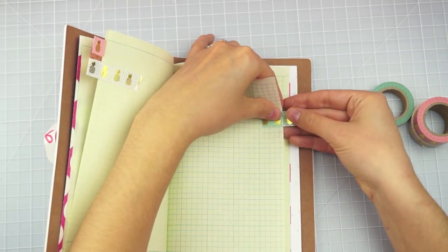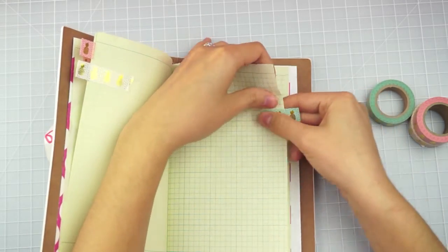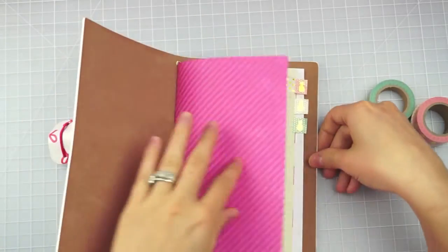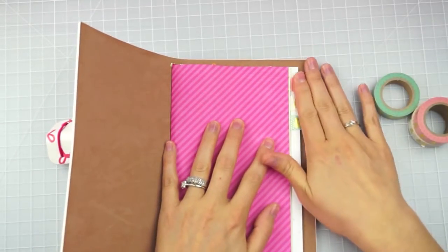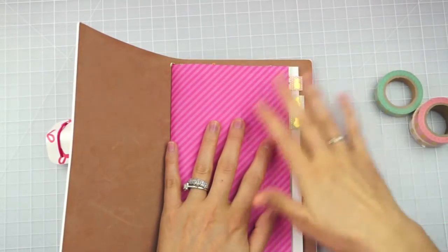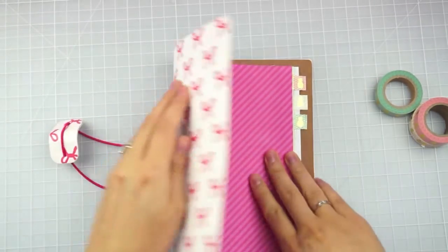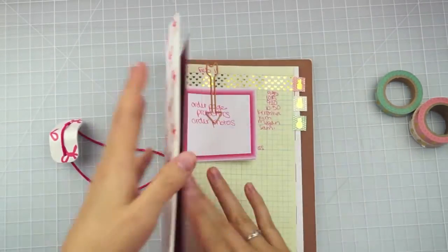So I want the whole pineapple showing. Just line it up and press it down. And there I have another little tab. Now they're not exactly even. You could definitely be more careful with it if you want to. I like the little kind of eclectic look of it. So I love the little tabs.